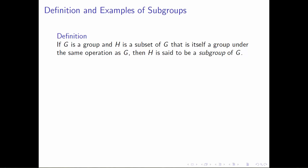Let's suppose that G is a group and H is a subset of G that is itself a group under the same operation as our original group G. That clause is very important — we need H to be a subset and also a group under the same operation as the larger group. If this is satisfied, then the subset H is said to be a subgroup of the group G.